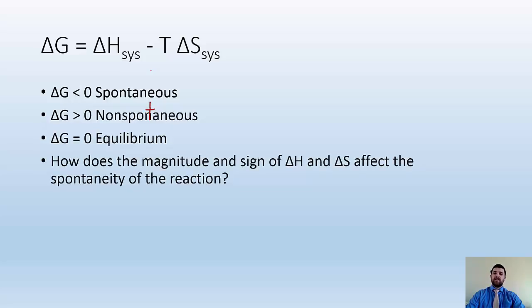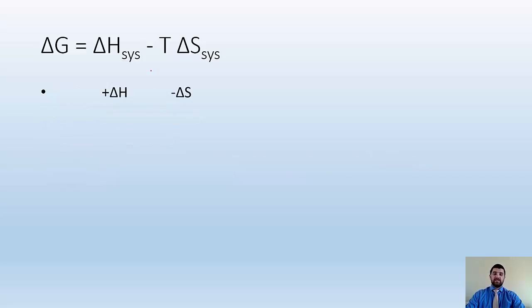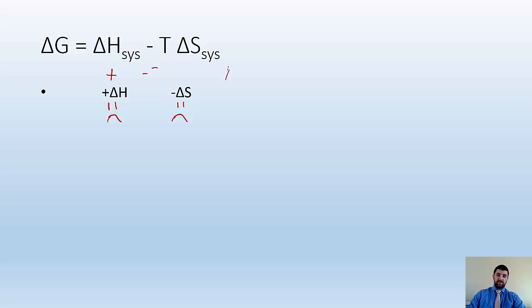So how does the magnitude and sign of delta H and delta S affect the spontaneity of a reaction? If I have a positive delta H and a negative delta S, the delta H is unfavored — it's endothermic. The negative delta S is also unfavored because we want things to get more chaotic. Mathematically, if I have a positive sign and I'm subtracting a negative, delta G is always going to be greater than zero, so it's never spontaneous.